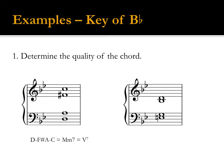This chord is spelled E-natural, G, B-flat, D, so it is a diminished-minor seventh, or a half-diminished seventh chord.